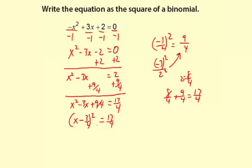Now the final step here is we're going to make it equal to 0, so we're going to subtract 17 fourths from both sides. Negative 17 fourths here, and then on the right side as well. So that's going to leave x minus 3 halves quantity squared minus 17 fourths equals 0.